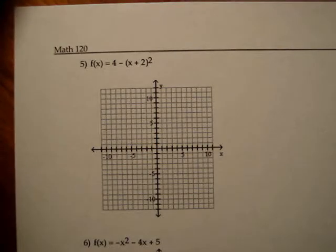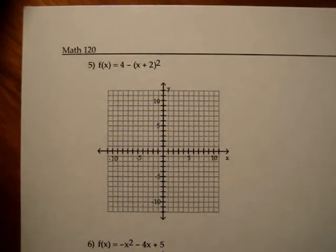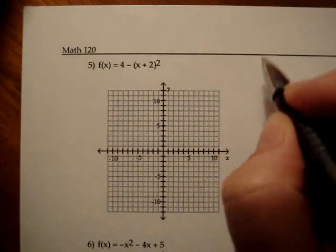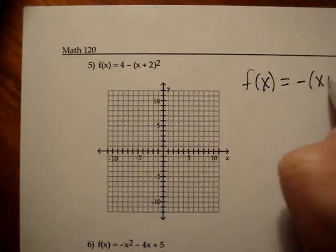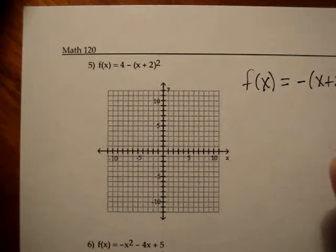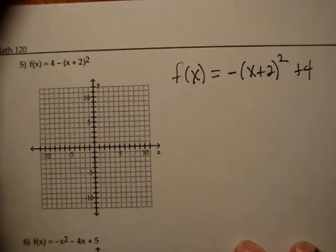The second page has three graphing problems and I'm going to do number five. Remember for all these graphing problems the instructions will say use the intercepts and the vertex. So let's start with the vertex on number five. The first thing I'm going to do is write it in a different order: f of x is equal to negative the quantity x plus 2 squared plus 4. Now this is in a form where I can just read the vertex off.